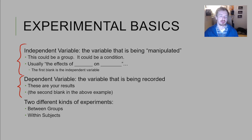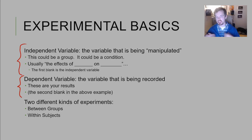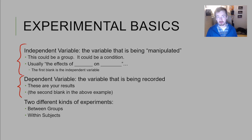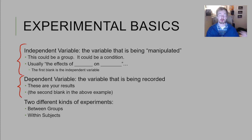Usually when you say 'I want to understand the effects of blank on blank,' the first blank is the independent variable. For example, if you're interested in the effects of sleep on memory, sleep is the independent variable and memory is the dependent variable. The independent variable is what you, the researcher, have control over — what you can change, arrange, or put participants into. That is your independent variable.